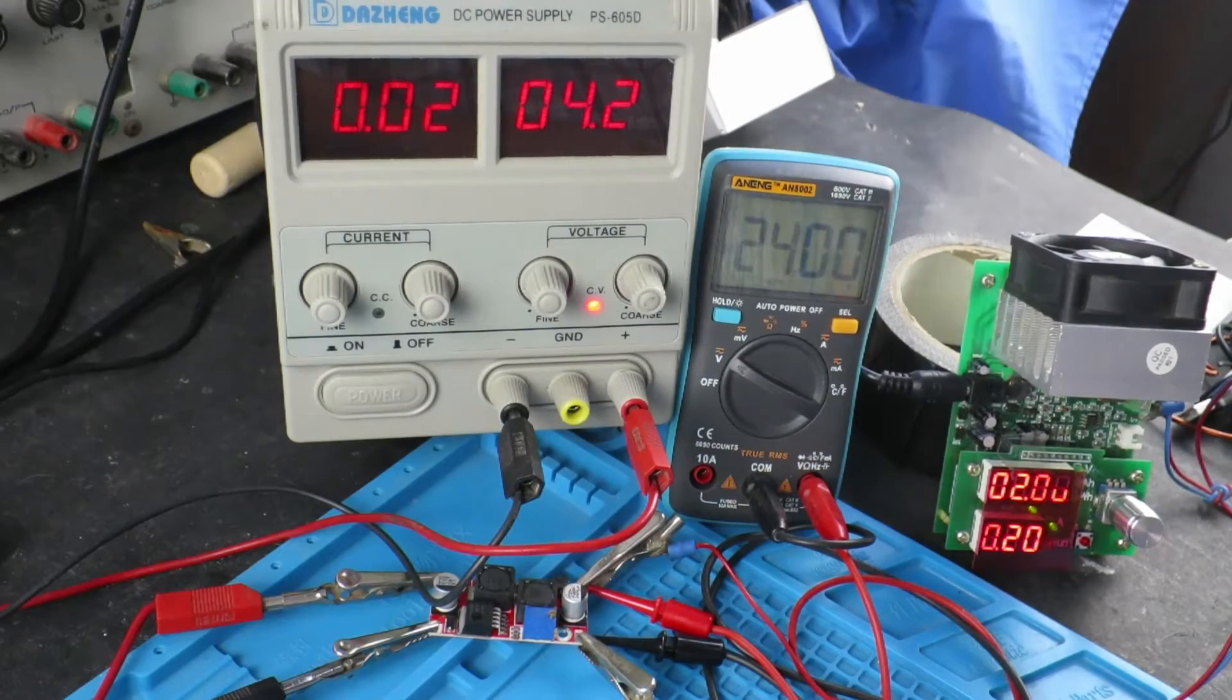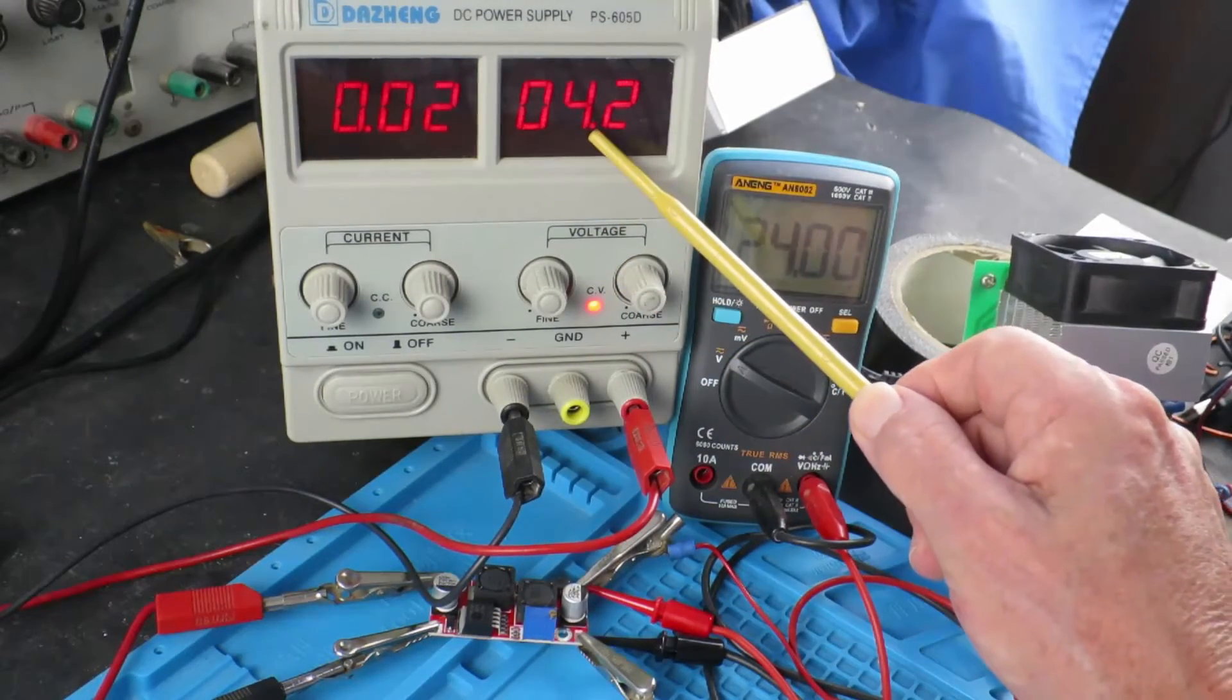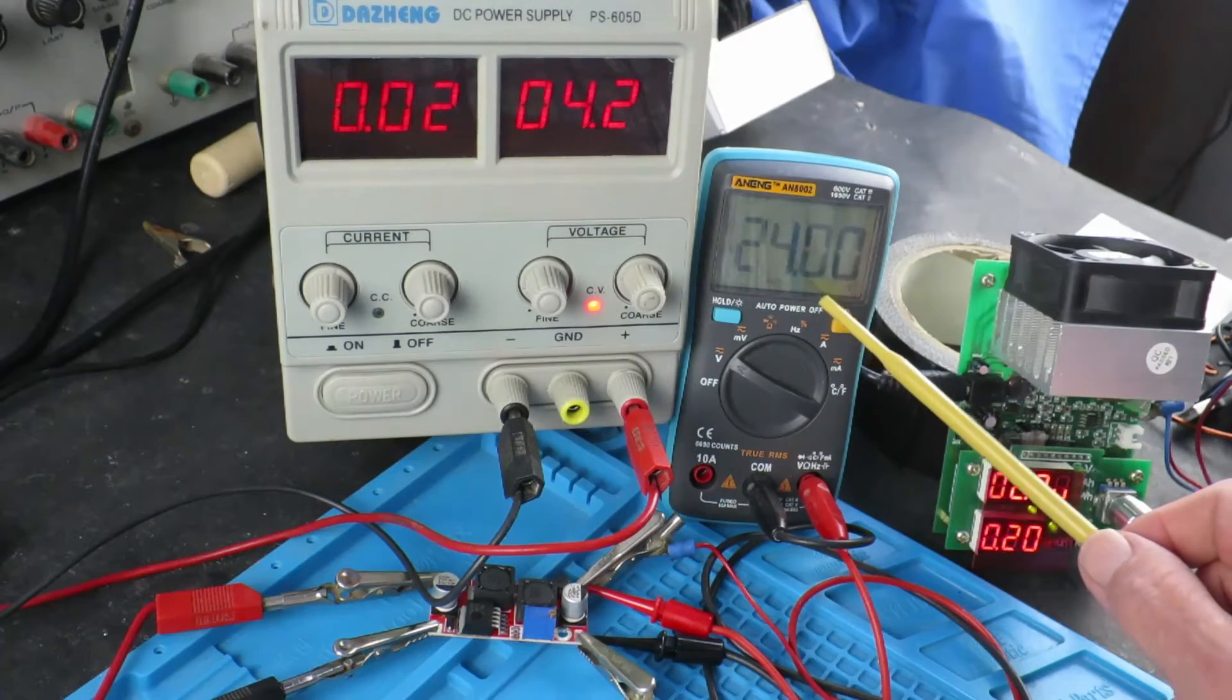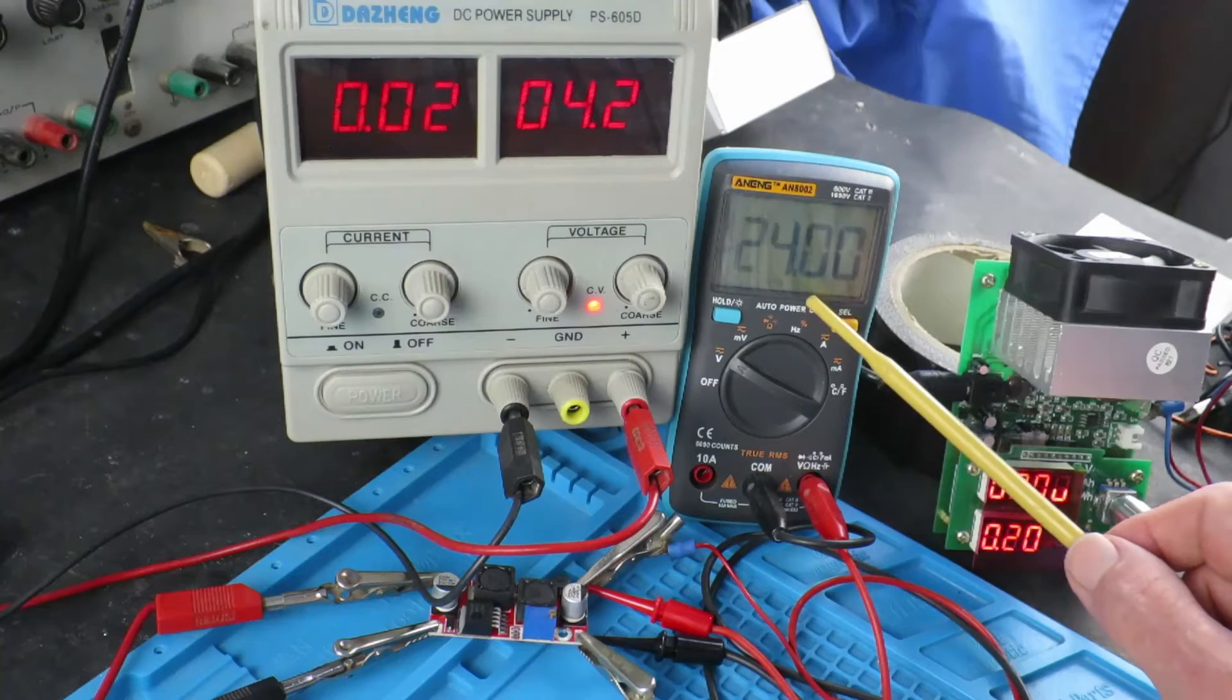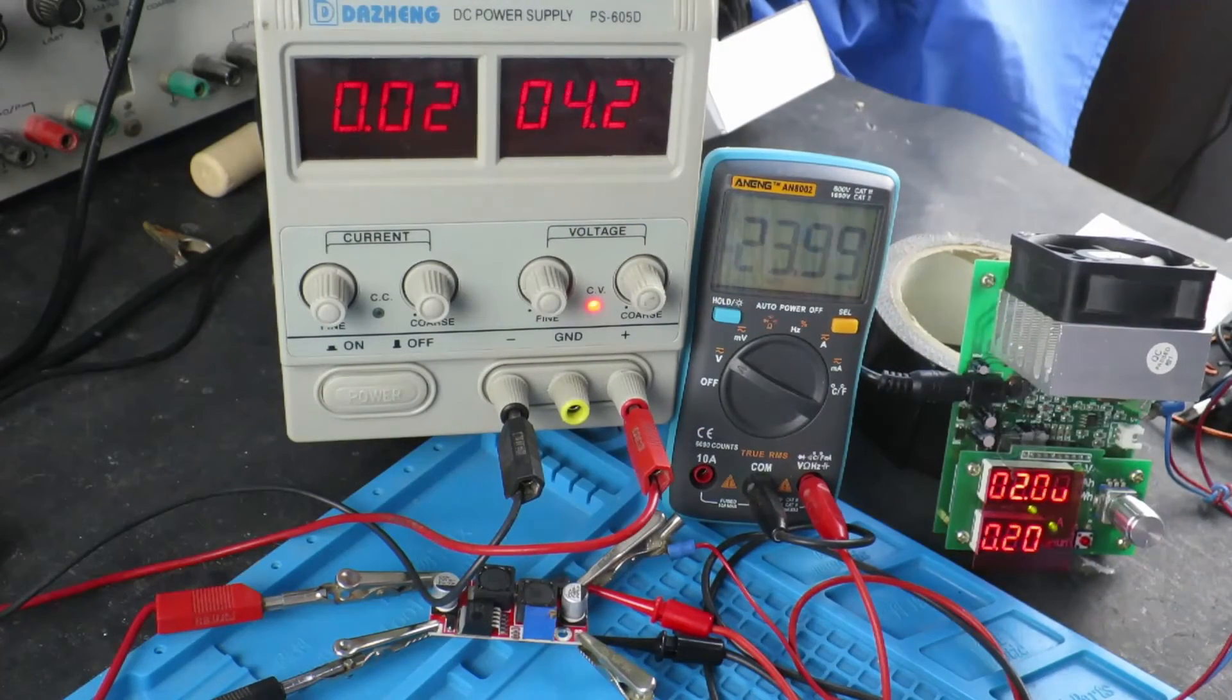So as in the previous video I just want to show what happens if you're trying to boost a relatively small voltage up to a much higher voltage, 24 volts in this case, and what effect that has on the input current because it is very significant.